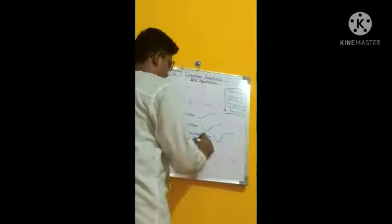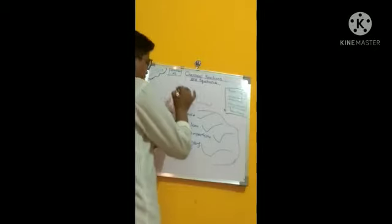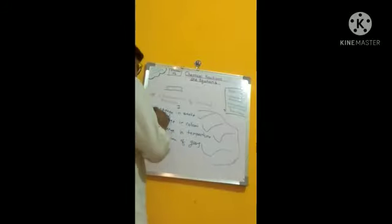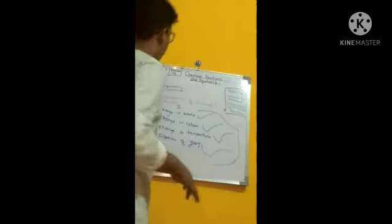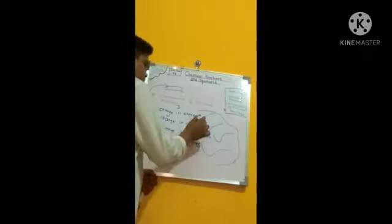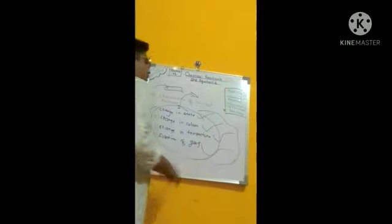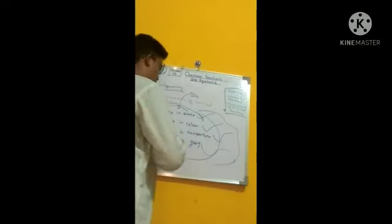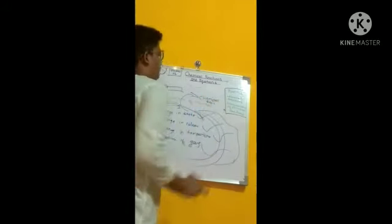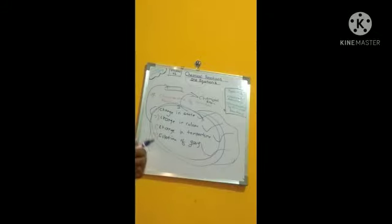Change in state, change in color, change in temperature, and evolution of gas — these are the four characteristics. When all these processes occur in a chemical reaction, we can say it is a chemical reaction. If all these characteristics are present, then we can confirm it is a chemical reaction. Friends, thank you for watching our YouTube channel. Please note it down in your notes.